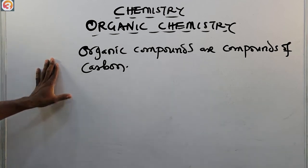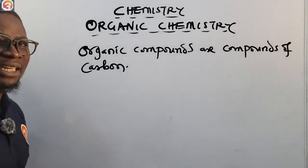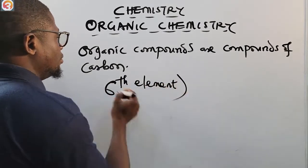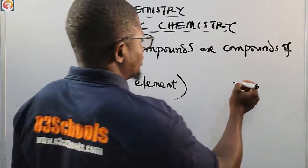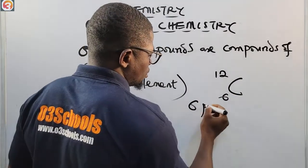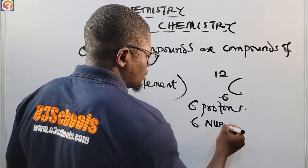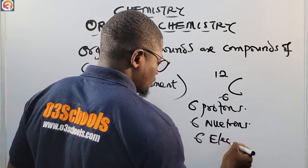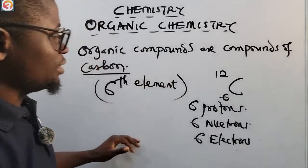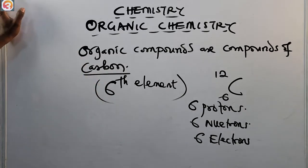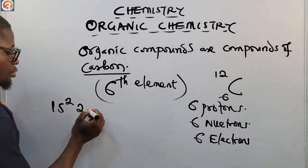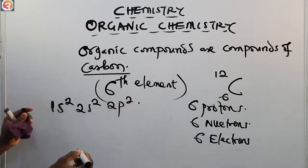Carbon is the sixth element in the periodic table. It has a mass of 12 and an atomic number of 6, meaning carbon has six protons and six electrons.